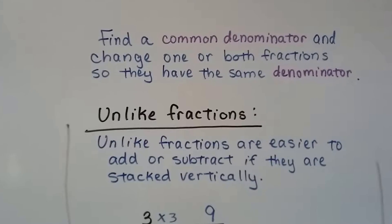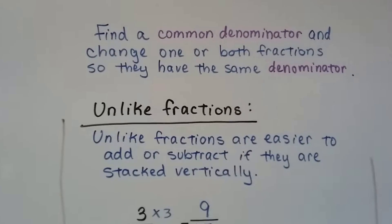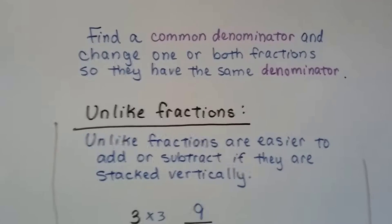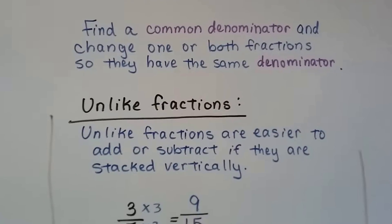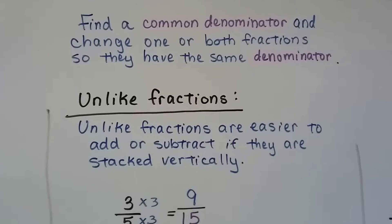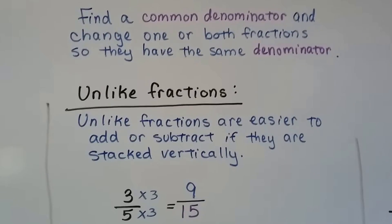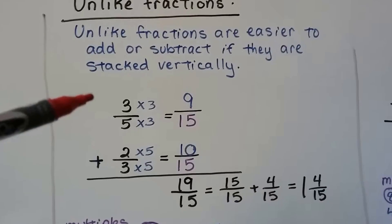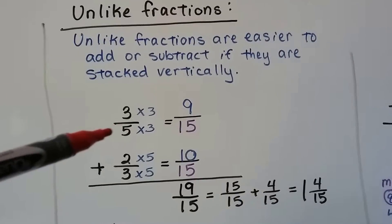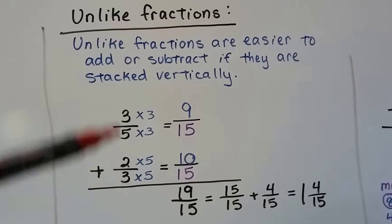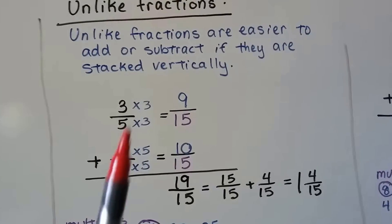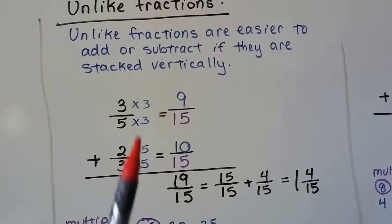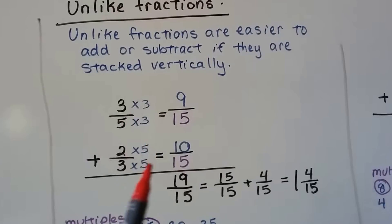For unlike fractions we need to find a common denominator and change one or both fractions so they have the same denominator. We don't have to change both if we don't have to — sometimes we can just change one to match the other. Unlike fractions are easier to add or subtract if they are stacked vertically. So if you have a denominator of 5 and a denominator of 3, it's easier to stack them so we have room to do all this work.